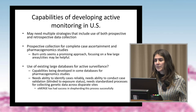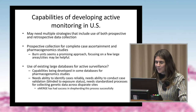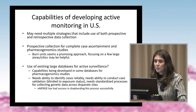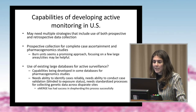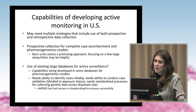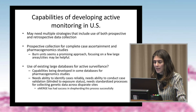We also talked about capabilities of developing active monitoring in the United States specifically. There are several challenges, including the fact that our healthcare system is very fragmented. We may need multiple strategies that include both prospective and retrospective data collection. For prospective data collection, we would need more complete case ascertainment for pharmacogenomics studies. The use of burn units seems to be a promising approach, since that's where many of these patients end up being cared for. Focusing on a few large areas or cities in the United States may be helpful, given the difficulties of doing this nationally.